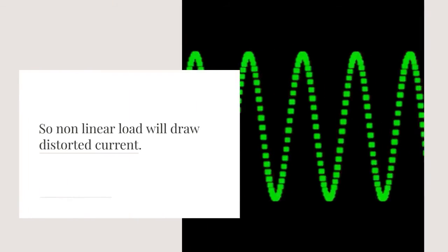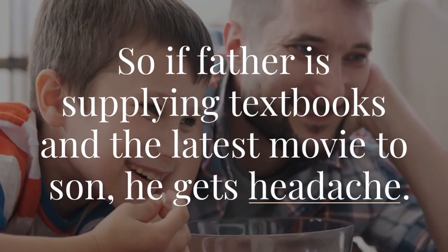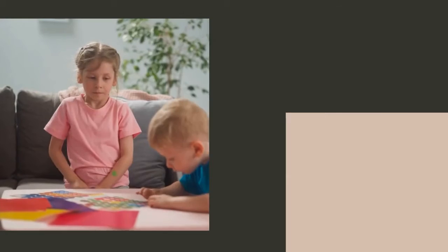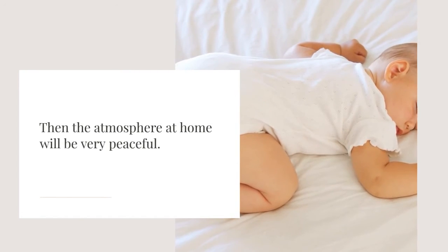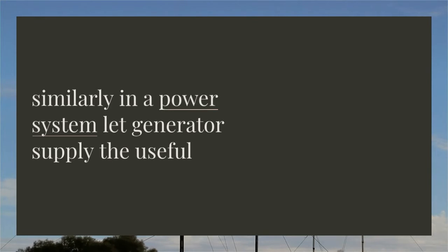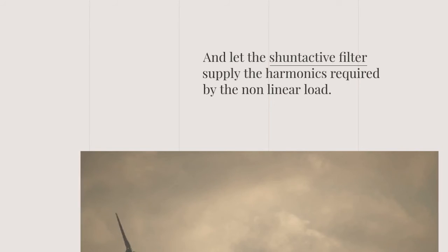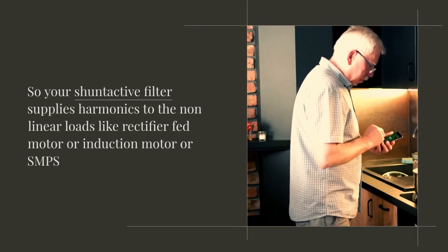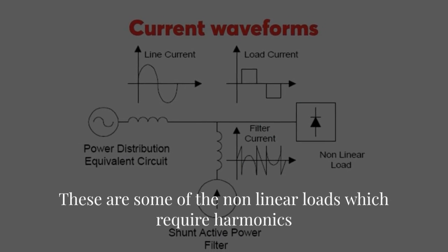So non-linear load will draw distorted current. So if father is supplying textbooks and the latest movie to son he gets distracted. If generator is supplying fundamental current and harmonics the heat will be more. It is better if father gives textbooks to the son and elder brother gives the movie to the younger brother. Then the atmosphere at home will be very peaceful. So similarly in a power system let generator supply the useful current and let the shunt active filter supply the harmonics required by the non-linear load. So your shunt active filter supplies harmonics to the non-linear loads like rectifier fed motor or induction motor or SMPS. These are some of the non-linear loads which require harmonics.